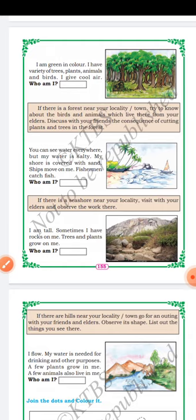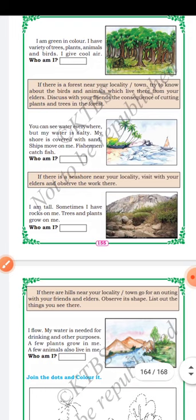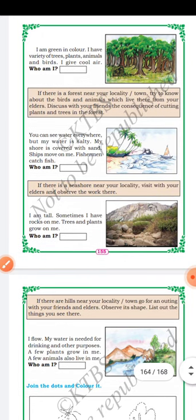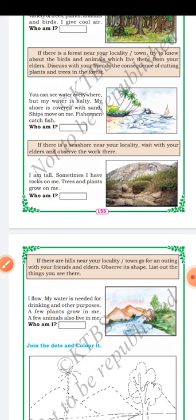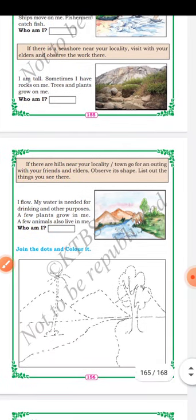Next riddle: I am tall. Sometimes I have rocks on me. Trees and plants grow on me. Who am I? Yes, it is a hill. A hill is a landform that is higher than the surrounding terrain and smaller than a mountain. If there are hills near your locality or town, go for an outing with your friends and elders. Observe its shape and list out the things you see there.